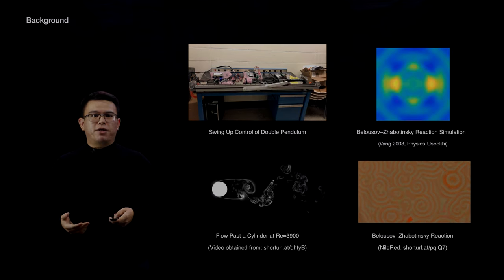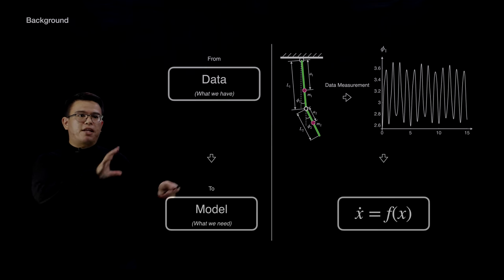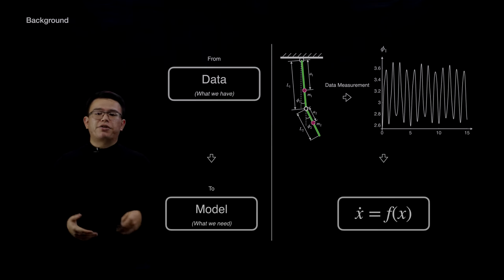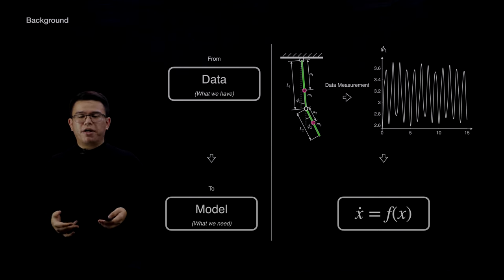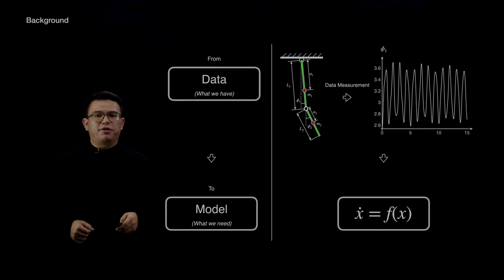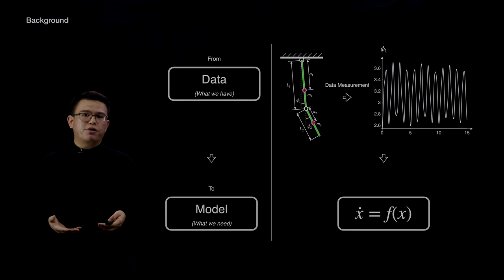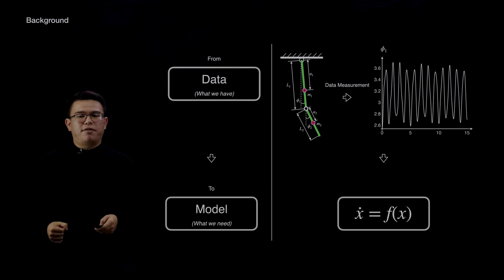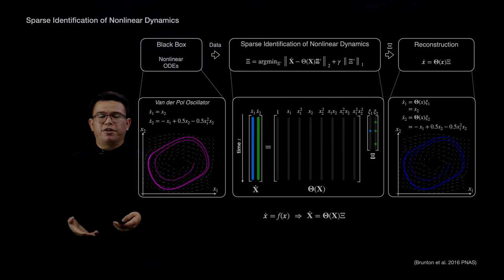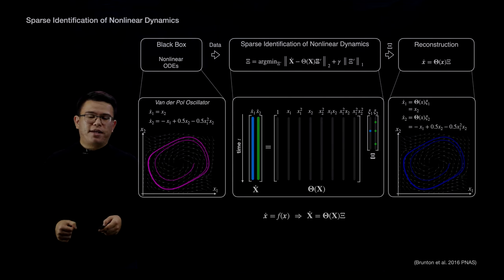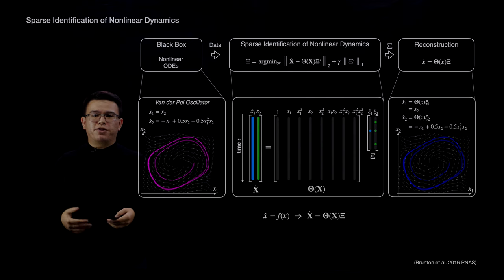In order to do this, we measure a bunch of data from the dynamics of interest and use sophisticated machine learning algorithms to figure out the best equations that can describe our dynamics while best fitting our data set. We're interested in identifying differential equations such as x-dot equals f(x). There are many algorithms that can do that, for example, the sparse identification of nonlinear dynamics algorithm, aka SINDy, which generates a parsimonious yet interpretable model.